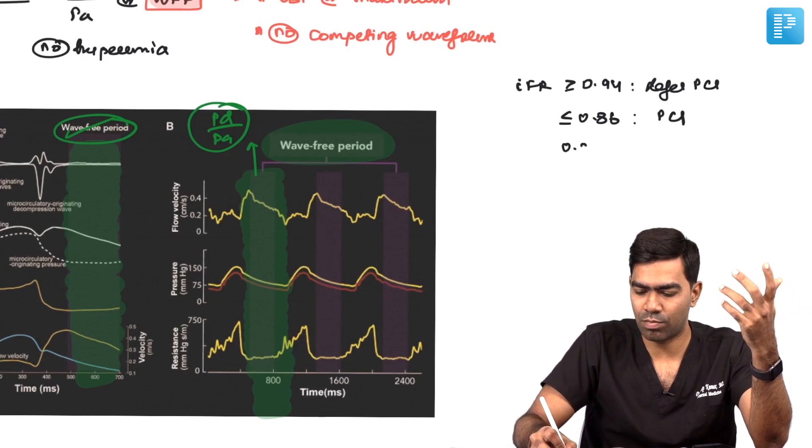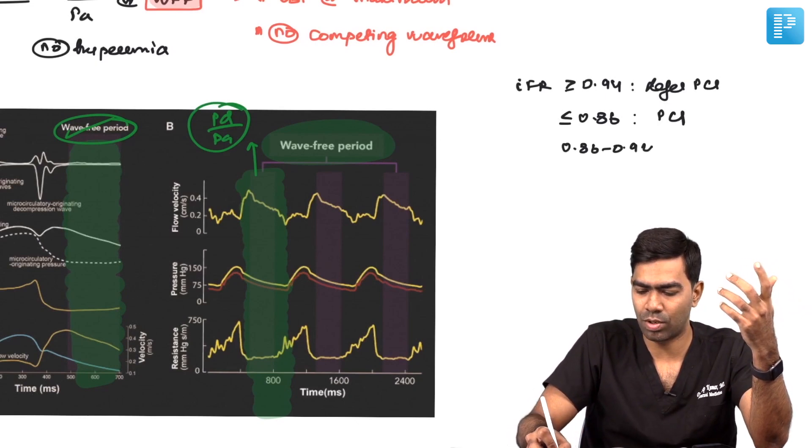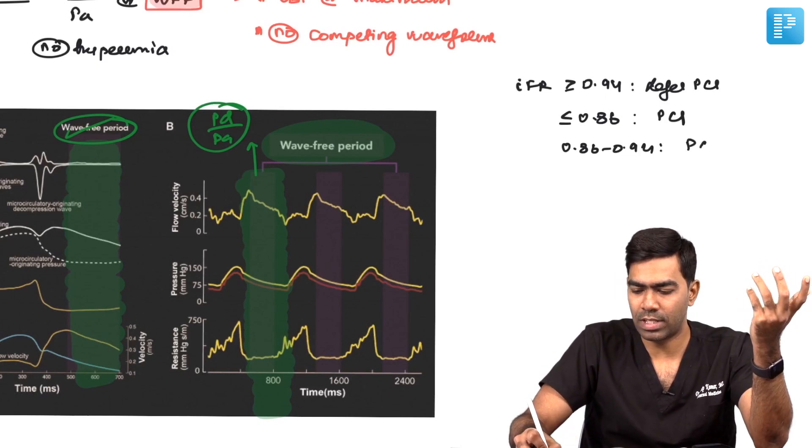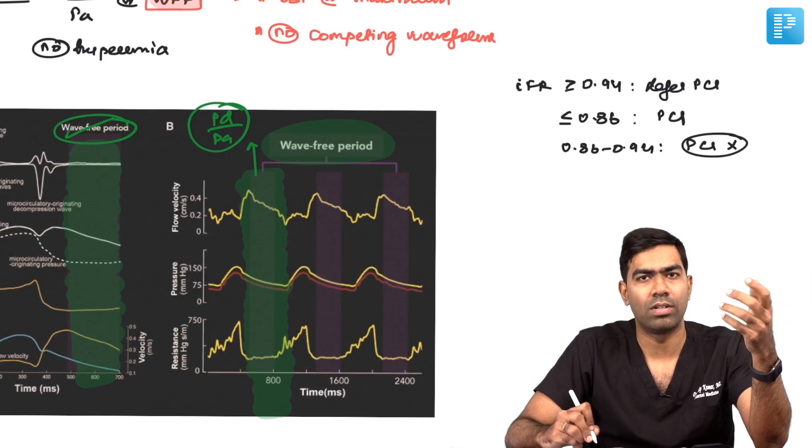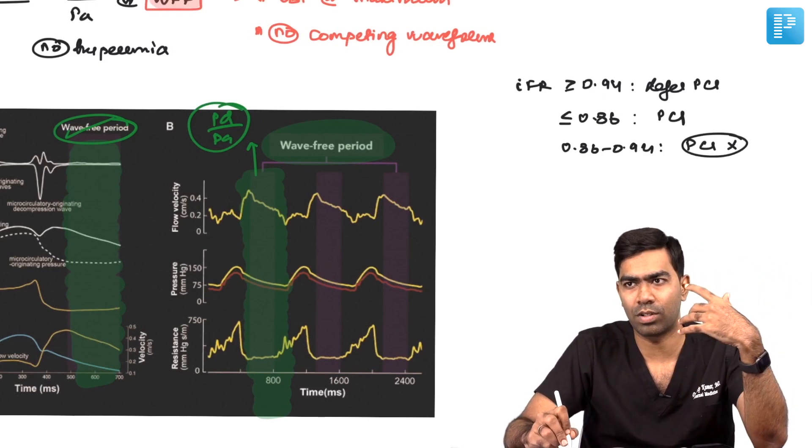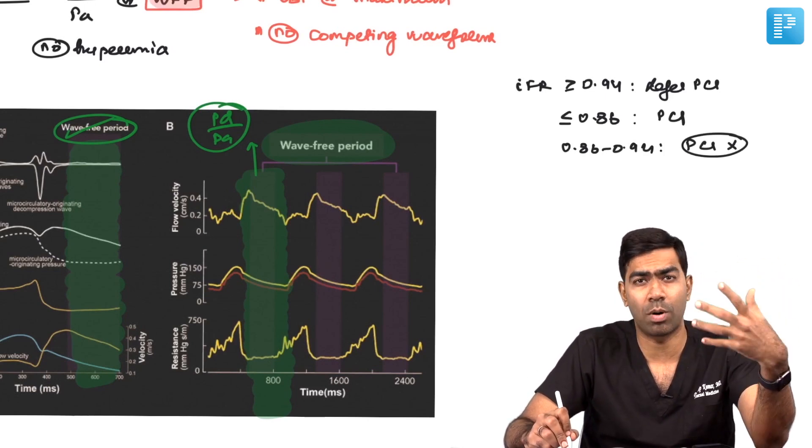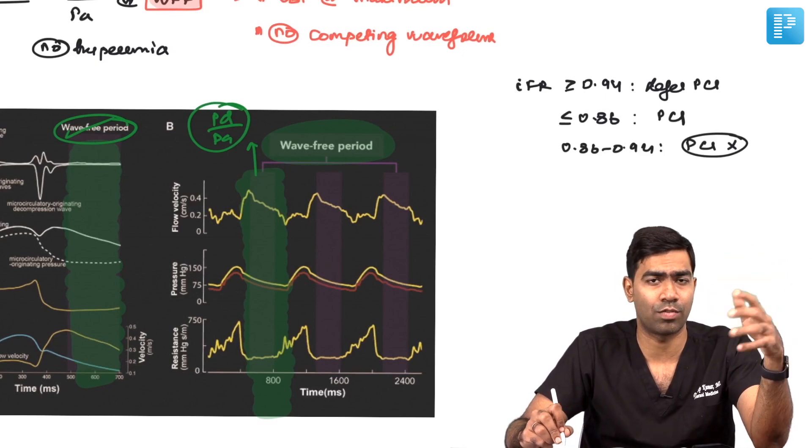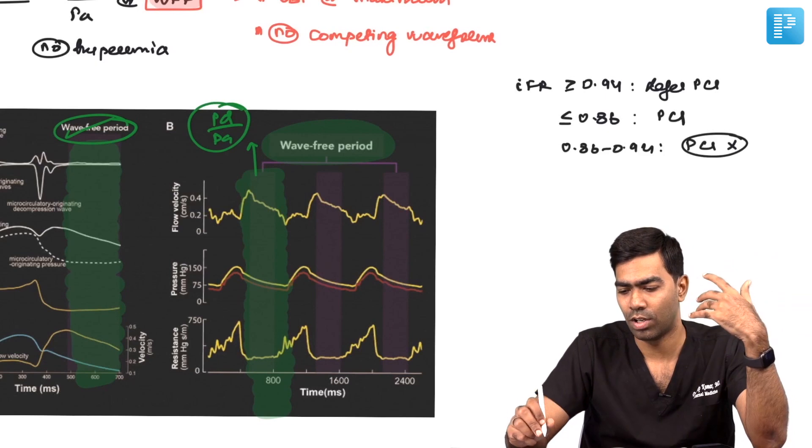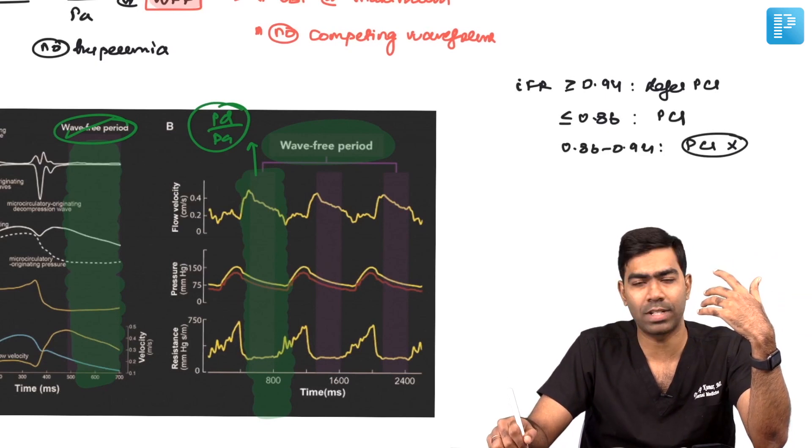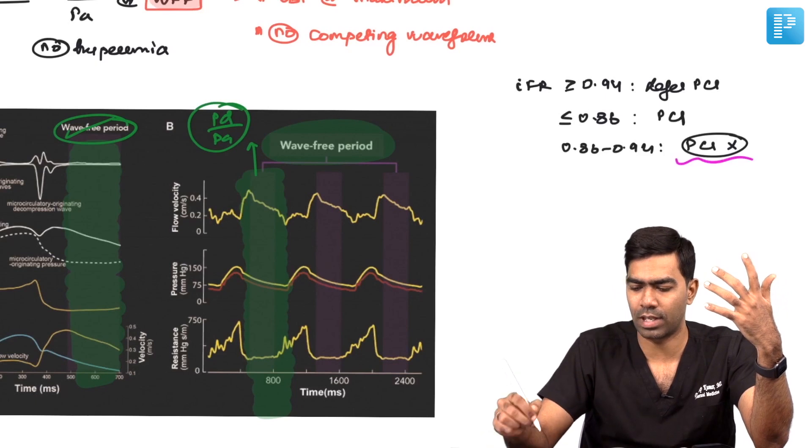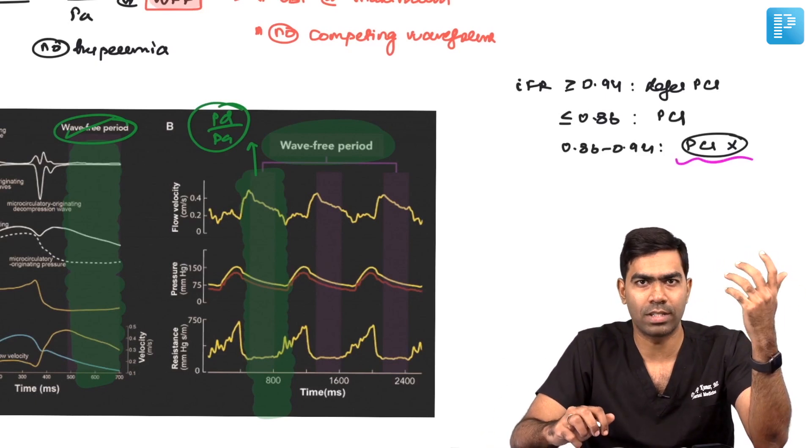Similarly, IFR in the range of 0.86 to 0.94 is a gray zone. Here, whether to do PCI or not depends on your personal expertise or the patient's comorbid conditions, their risk for future cardiovascular disease or death, or their current symptom status. Depending on these factors, you can decide whether to do PCI.